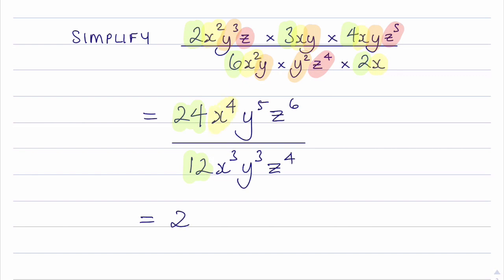Looking at the x terms, I have x to the power 4 divided by x to the power 3. So that's going to give me an x.